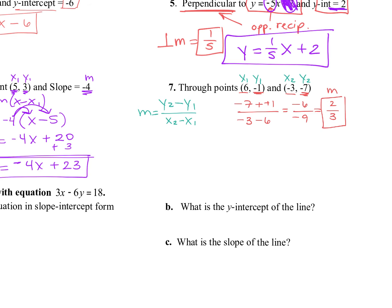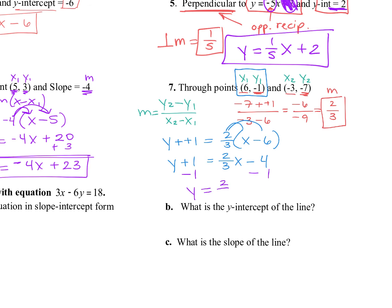Now from here you may pick either point — they both will work. I'm going to pick the first point, (6, negative 1). So it will be y minus negative 1 equals 2/3 times x minus 6. Simplify — that's plus 1. Distribute the 2/3: y plus 1 equals 2/3x minus 4, because 2/3 of 6 is 4. Then subtract 1: y equals 2/3x minus 5.